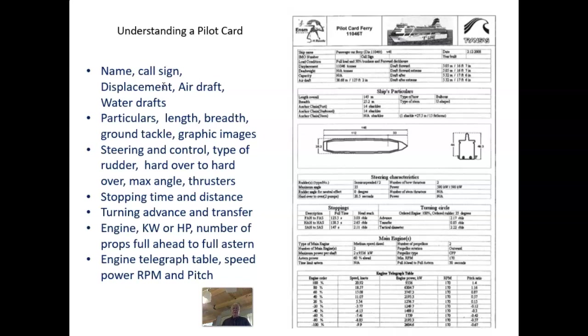Going on to the next subject, I want to talk about something called the pilot card. Pilot card is something which is given to the ship pilot when the ship pilot comes on board. They are given the pilot card and they have immediate information. It has the name of the ship, the call sign, the displacement, the air draft and the water drafts. Day to day, those drafts will change as you load cargo, as you burn off fuel.